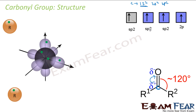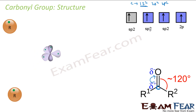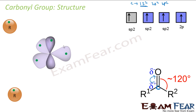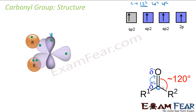So now if you see, the same carbon went for sp2 hybridization. There are four electrons in the green. This is my sp2, sp2, and 2p. The other ones are my sp2. This is my 2p — the horizontal one — and this is my sp2. This is how the carbon atom looks like. And there are two alkyl groups attached to it — alkyl or aryl, whatever it is.